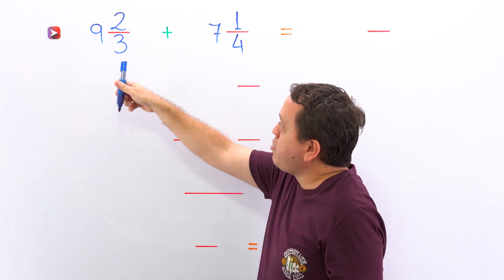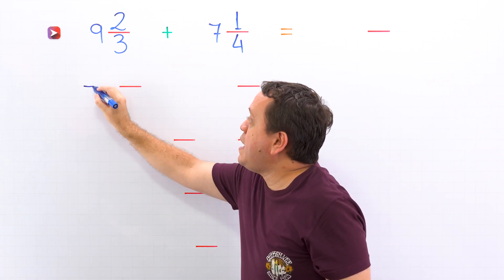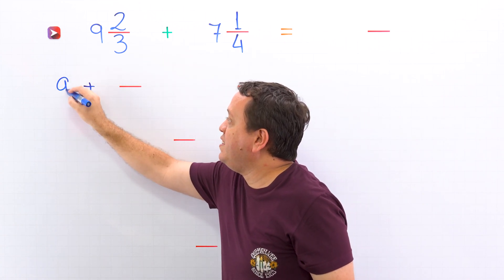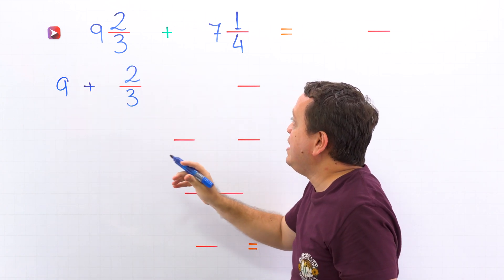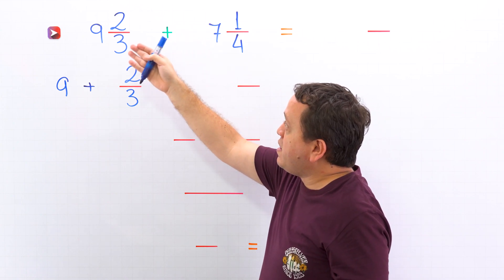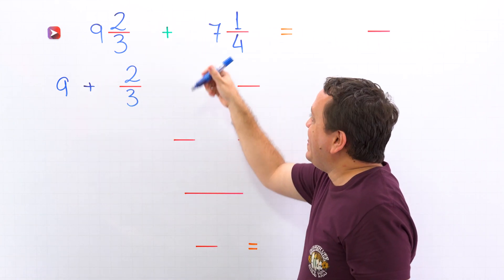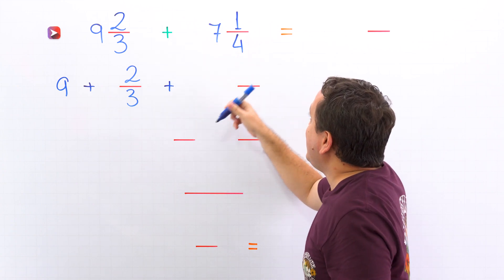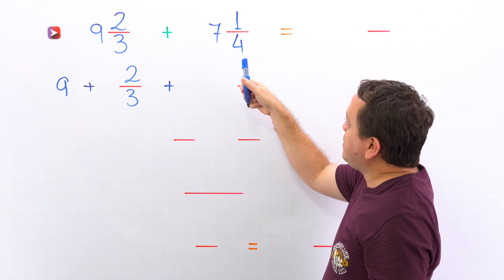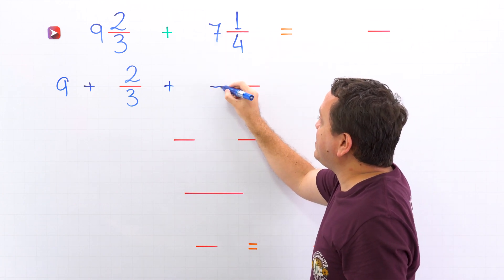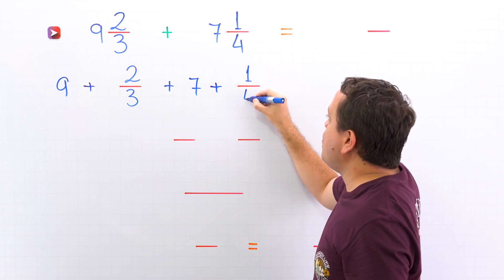So first, we rewrite the mixed number 9 and 2 thirds as the sum of a whole number — 9 in this case — and a proper fraction, 2 thirds. Then we put the plus sign, and here we do exactly the same with the second mixed number. We rewrite the mixed number 7 and 1 fourth as the sum of a whole number, 7, and a proper fraction, 1 fourth.